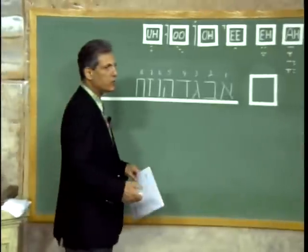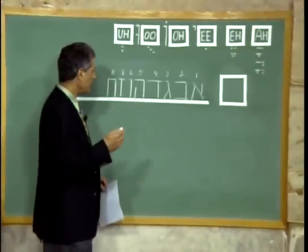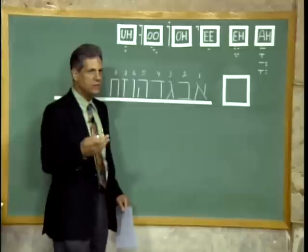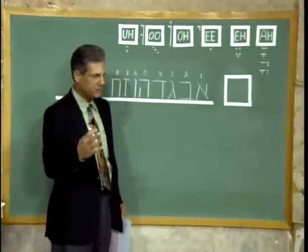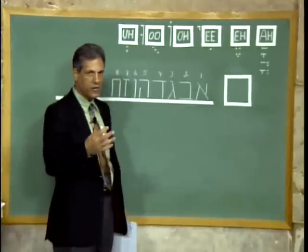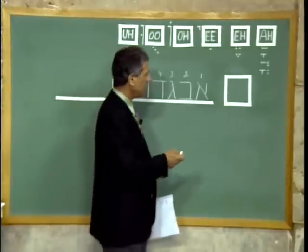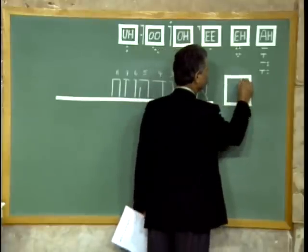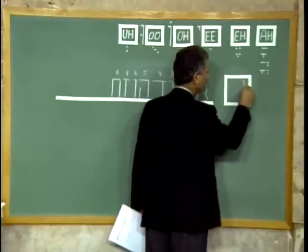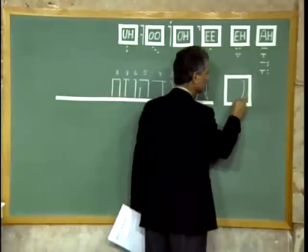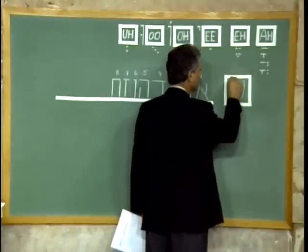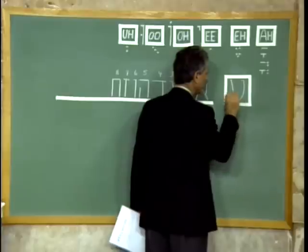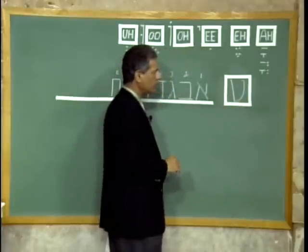The letter I want to talk about today is the ninth letter of the alphabet, and it's called Tet. It's the sound of T, and it's drawn like this: you start at the top, go down, start at the top again, and come down again. You meet that line. This is your Tet.